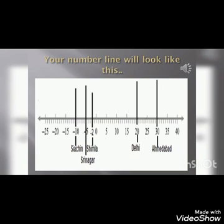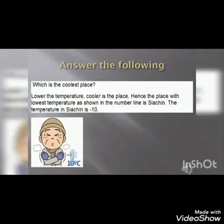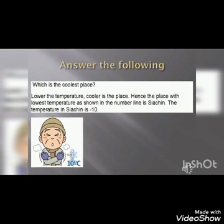Now using this number line, you need to answer: which is the coolest place? The answer is Siachen. Lower the temperature, cooler is the place. Hence the place with the lowest temperature as shown on the number line is Siachen. The temperature in Siachen is minus 10 degrees Celsius.